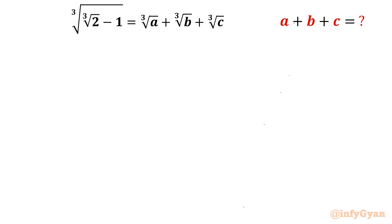Hello everyone, welcome to InfiGAN. In this exciting video on algebraic expressions, we are going to simplify a challenging problem on radical expressions. The equation is: cube root of (cube root 2 minus 1) equals cube root a plus cube root b plus cube root c. We have to find the value of a plus b plus c, where a, b, c are rational numbers.